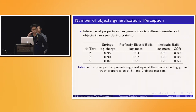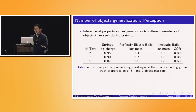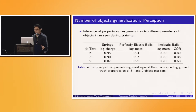One thing that's important in intuitive physics is generalization. We show here that the perception side of our network generalizes very well to different numbers of objects. We trained only on six-object datasets, but when we test our perception module on three and nine object datasets, the results are quite good. The R-squared values when principal components are regressed against their corresponding physical properties remain high, indicating that inference is capable of generalizing to scenarios with different numbers of objects.